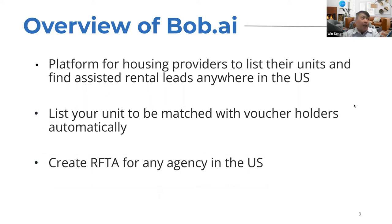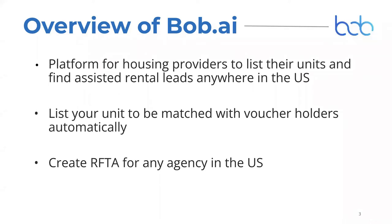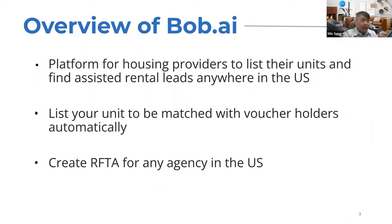Bob.ai is a platform for housing providers to list their units and find assisted rental leads anywhere in the US. All documents completed are very similar across the board for any housing authority, whether in California or DC — everything is standardized in terms of what HUD is looking for. Once you list your unit, you'll be automatically matched with voucher holders by bedroom size and affordability. You can also create the RAFTA for any agency in the US and download or email the RFTA packet.